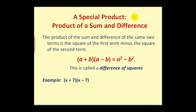Next is a special product. The product of the sum and difference of the same two terms is the square of the first term minus the square of the second term. If we have the quantity A plus B times the quantity A minus B, this will equal A squared minus B squared. This is a nice shortcut if you recognize the pattern, but if you don't, that's fine — as long as you remember how to multiply polynomials together, the end result will be the same. This is just a shortcut.